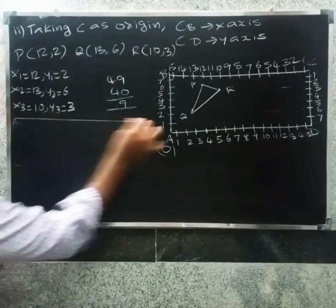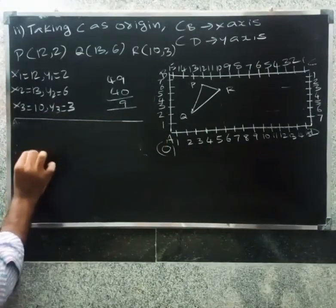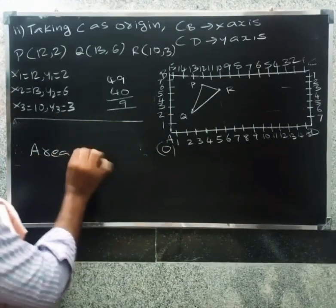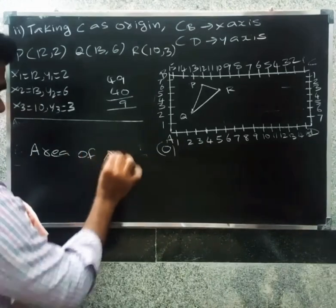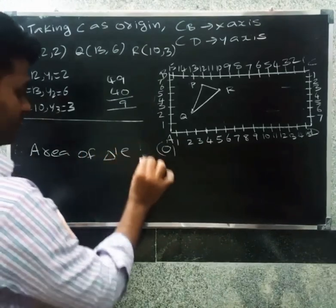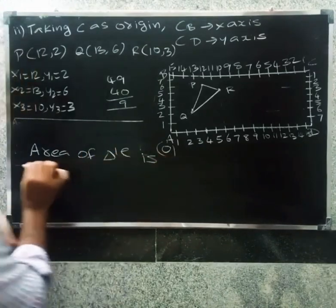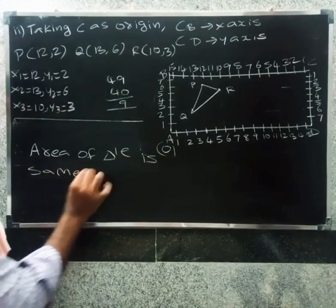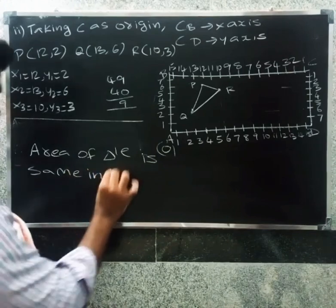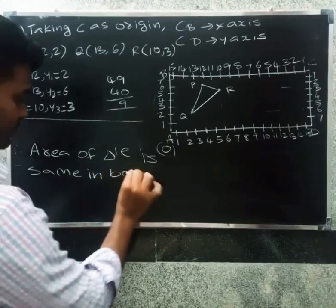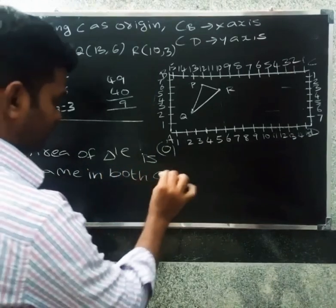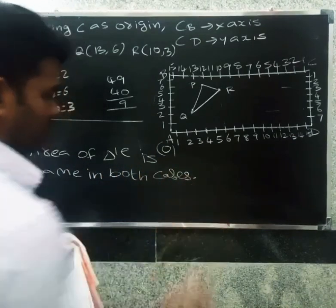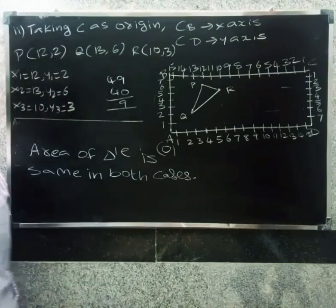Therefore, the area of the triangle is the same in both cases — 9/2 square units — whether A or C is taken as the origin. Thank you.